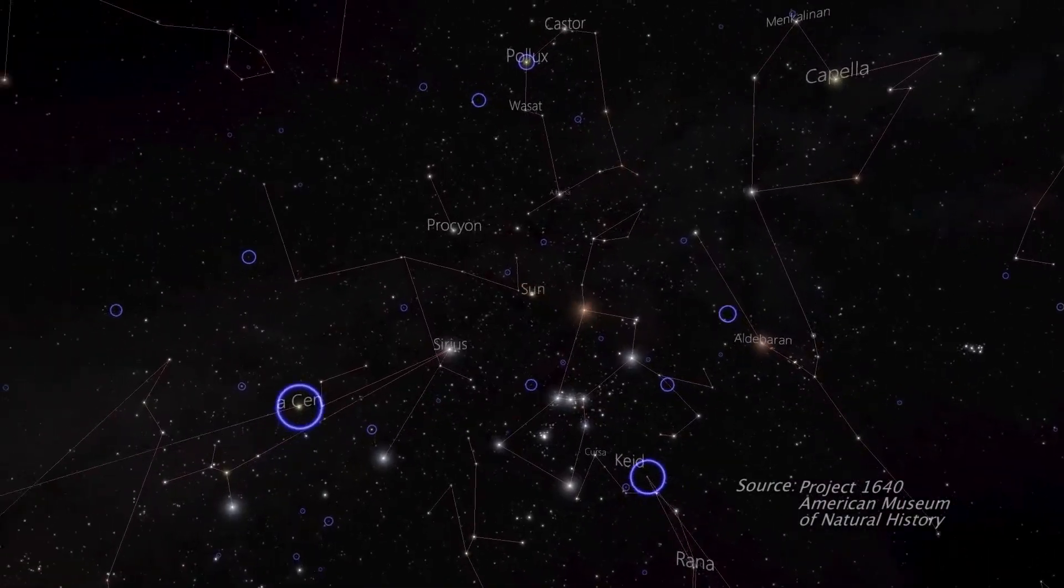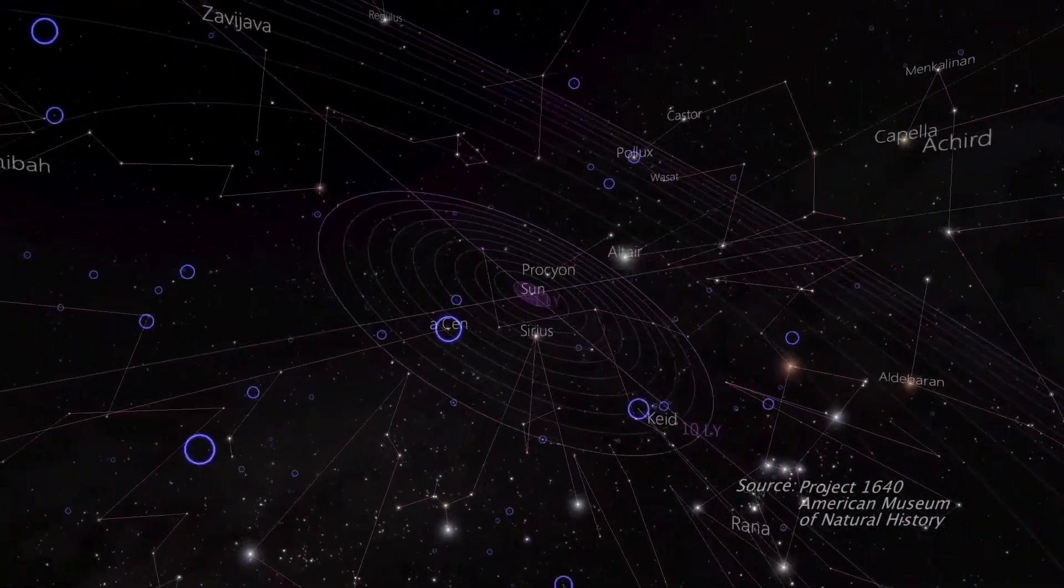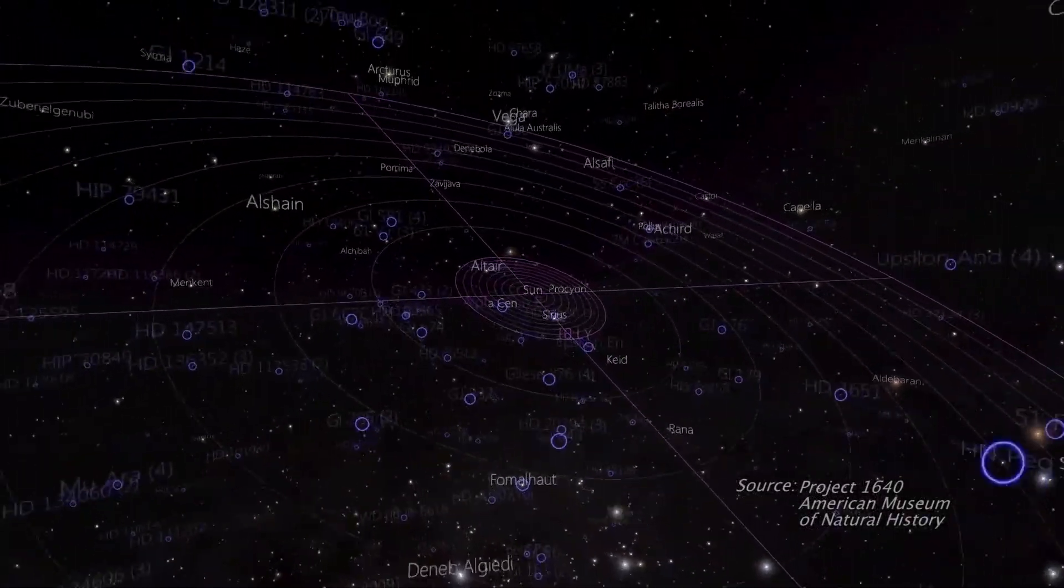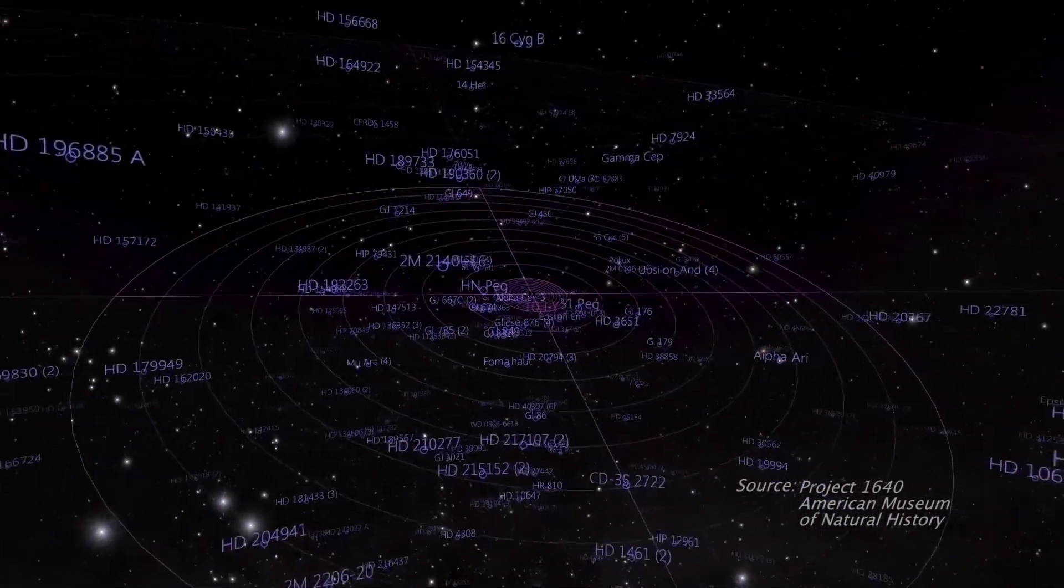By looking at the constituents of these four planets, that will give us some insight into how this particular solar system formed and whether our solar system formed in a similar or different way. It's a new way to find planets and look for life outside our solar system. I'm Josh Lebowitz reporting.